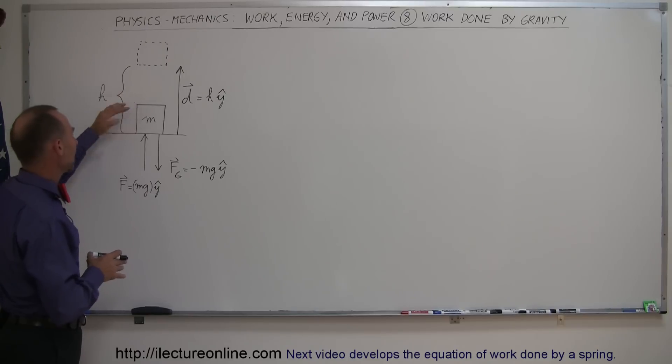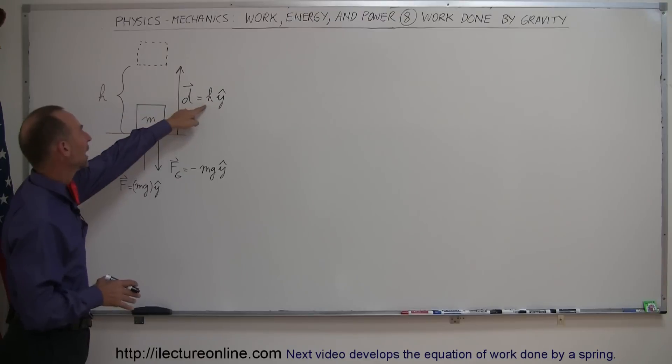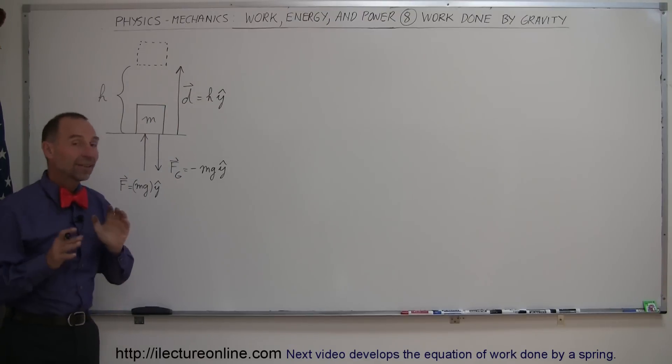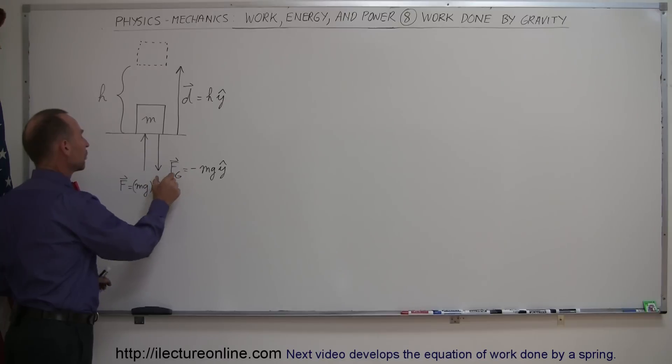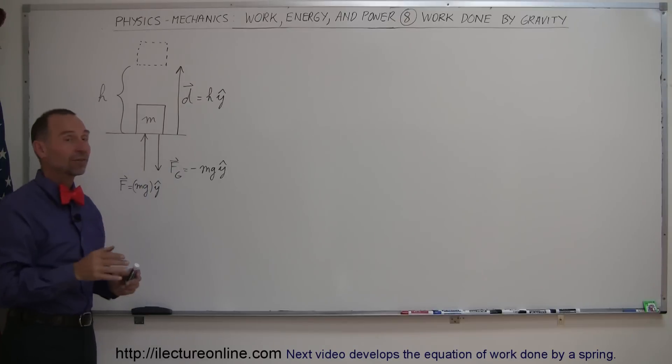Let's say we have an object with mass m sitting on the ground, and some force pushes the object upward a distance of h above the ground. In this case, we have a force which has to be equal to the force of gravity to push the block up at a uniform velocity.